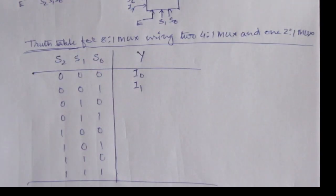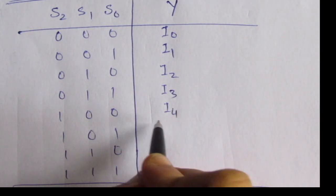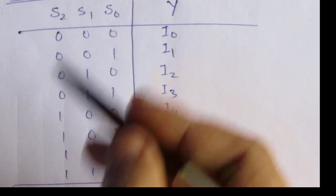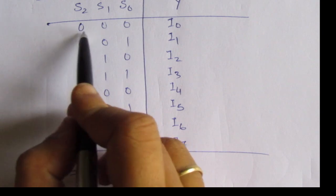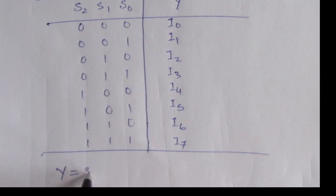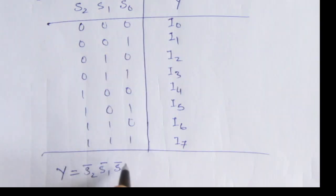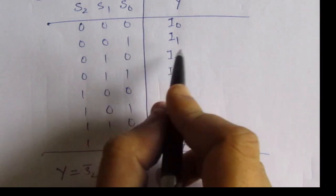Completing the truth table, we get outputs I2, I3, I4, I5, I6, and I7 for the remaining select line combinations. From this table we can derive the expression for output Y. For example, when S2=0, S1=0, S0=0, the term is S2-bar · S1-bar · S0-bar · I0, plus similar terms for all other input combinations.